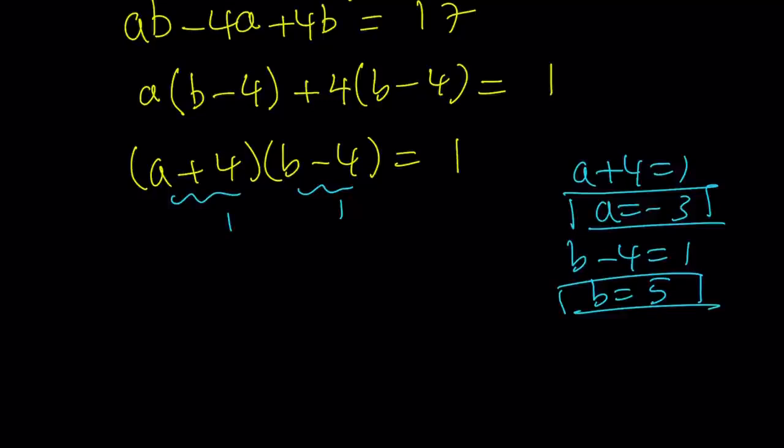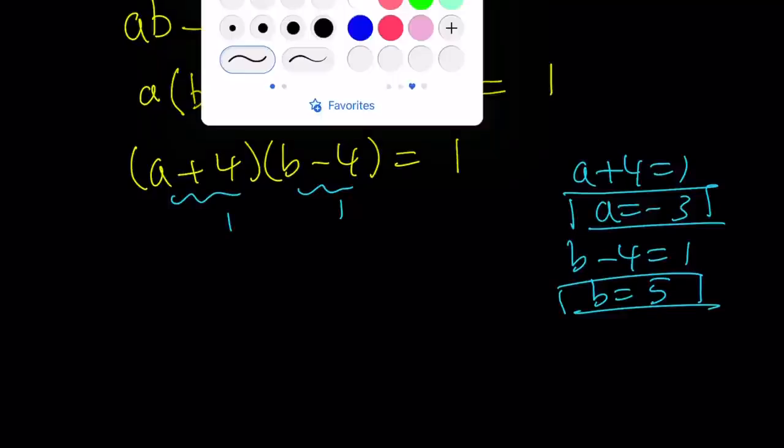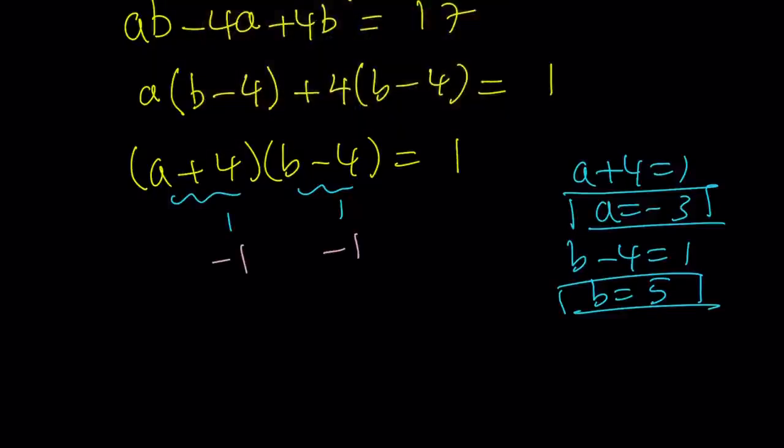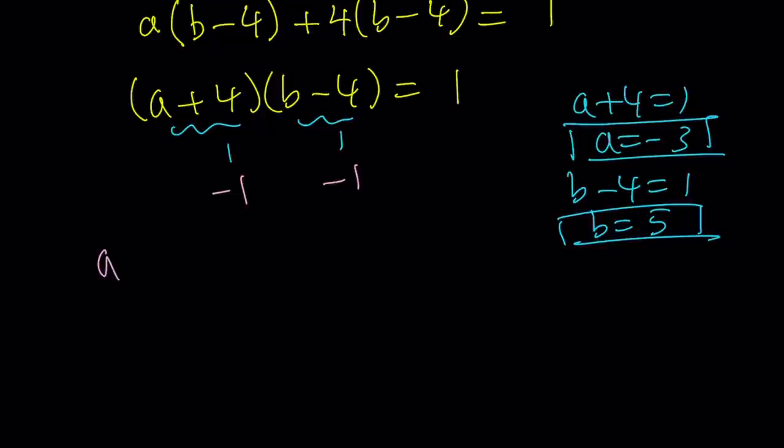How about the second case scenario? The second case scenario is basically you have the negative 1 and the negative 1. Let's go ahead and do it over here. If a plus 4 is equal to negative 1, this means a is equal to negative 5. And if b minus 4 is equal to negative 1, that means b is equal to 3.